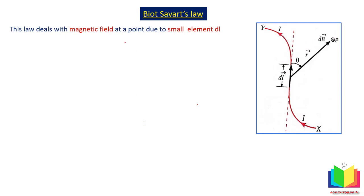This law deals with the magnetic field at a point due to a small current element dL. We have a wire XY carrying current I. We define a term: I dL is known as the current element — the small length dL with current I flowing through it. Because of this current element, we get a small amount of magnetic field at point P, and then we can integrate over the total wire to find the total value of the magnetic field.